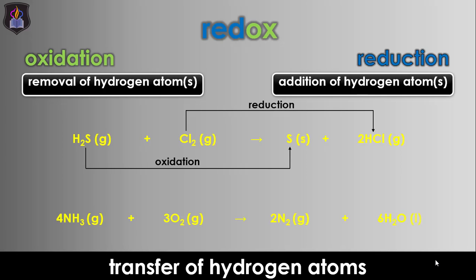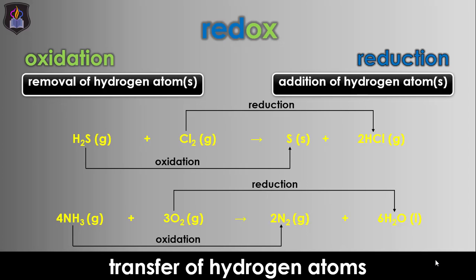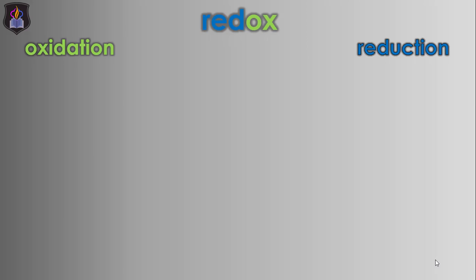Also, in the combustion reaction of ammonia in limited oxygen to form nitrogen gas and steam, the ammonia is oxidized to nitrogen because it lost hydrogen atoms to oxygen, while the oxygen gas is reduced to steam due to the addition of hydrogen atoms from ammonia.